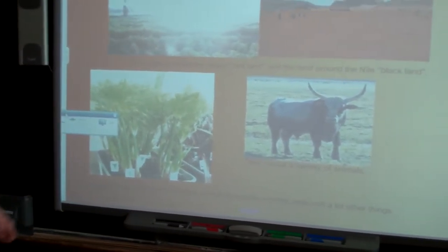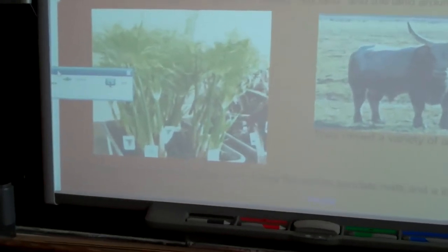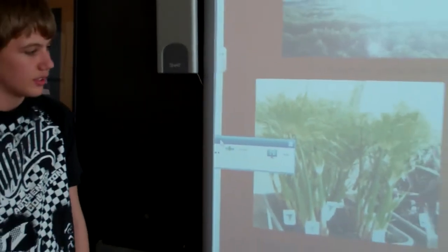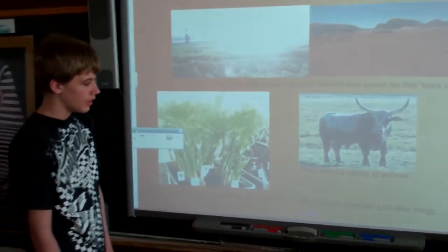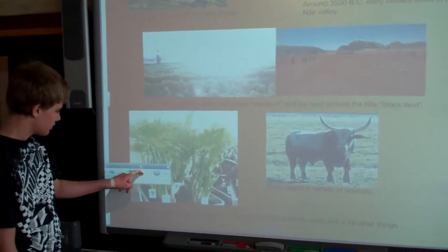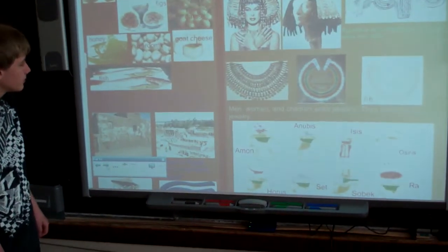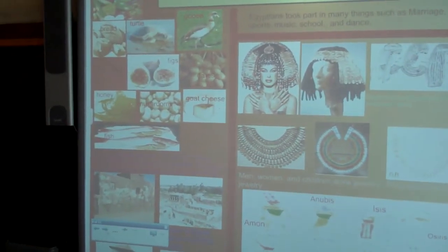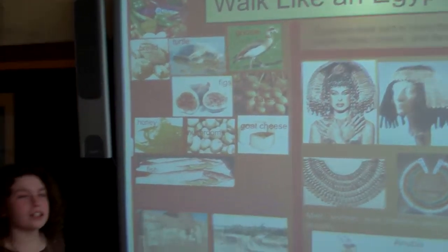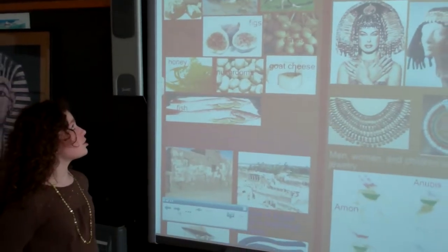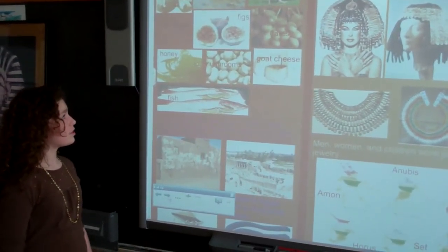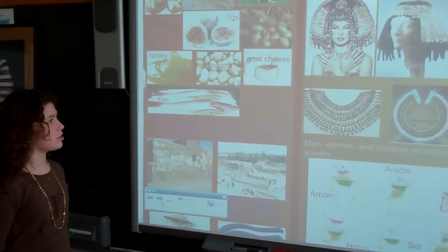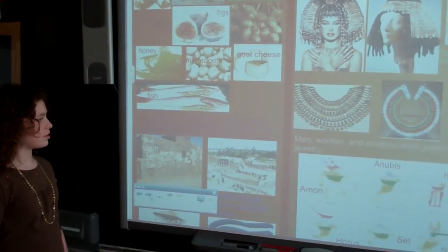The Egyptians used papyrus for many things like scrolls, sandals, mats, and a lot of other things. The Egyptians ate many foods such as vegetables, bread, turtle, goose, fish, eggs, figs, dates, honey, mushrooms, goat, cheese, and many more.